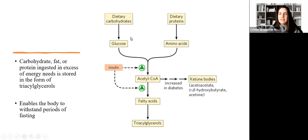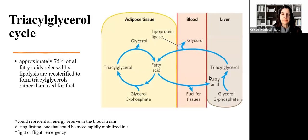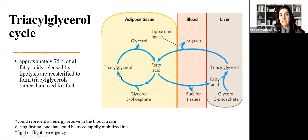Through our diet, we receive carbohydrates and proteins. Carbohydrates lead to glucose production, and proteins generate amino acids once metabolized. These compounds account for the production of acetyl-CoA, which can be used for fatty acid synthesis, and consequently for triacylglycerol synthesis. This enables the body to withstand periods of fasting. Regarding the triacylglycerol cycle: approximately 70% of all fatty acids released by lipolysis are re-esterified to form triacylglycerol.